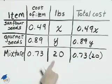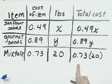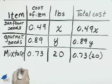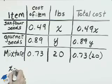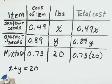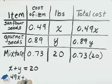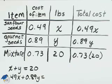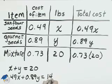Our equations come from the pounds column and the total cost column. We'll have X plus Y equals 20, and 0.49X plus 0.89Y equals 0.73 times 20, which is 14.6.